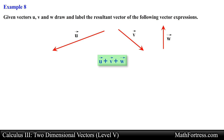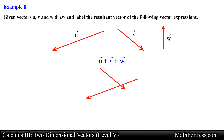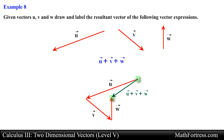Here we are asked to add all three vectors. The best way to tackle these types of problems is by applying the triangle law multiple times. We essentially need to align the head of one vector with the tail of another, one after the other. The resultant vector has its initial point at the tail of vector U and ends at the head of vector W.